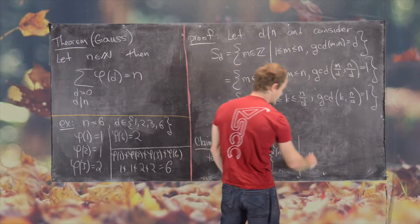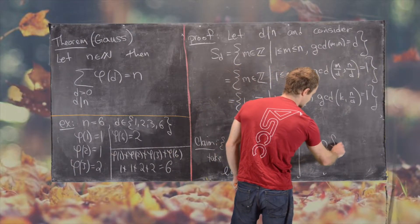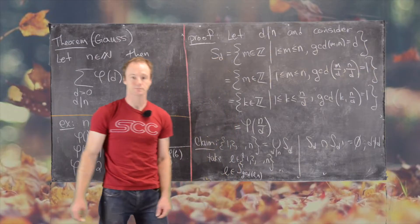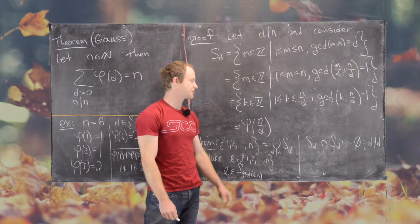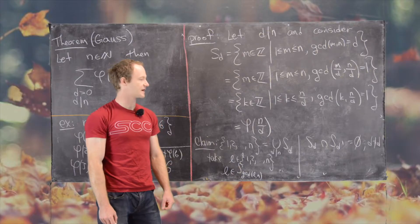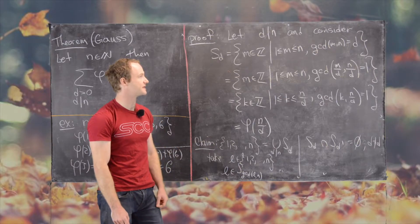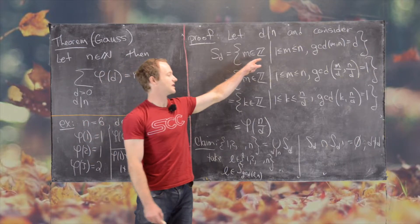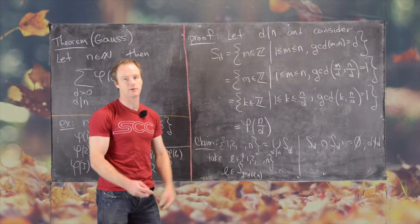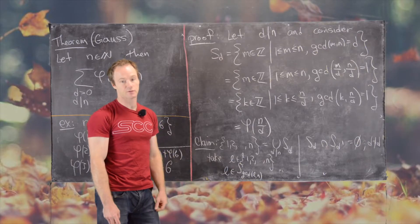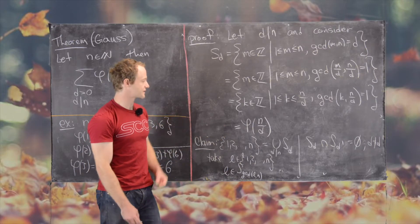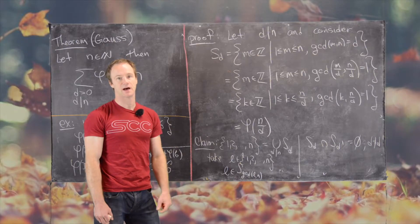So this is one part of our claim. And another part of our claim is that S sub D intersect with S sub D prime is equal to the empty set if D is not equal to D prime. So in other words, if you've got two things that divide n, and you intersect their sets that are built out of that, you get the empty set. And so this is pretty clear because otherwise the element that's in both of these sets would have two different GCDs when you take them with D, but that would mean that the GCD was not a well-defined function.